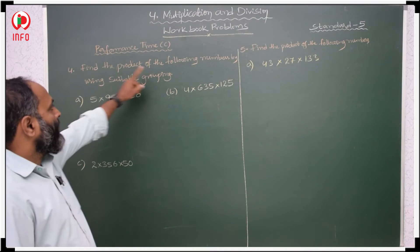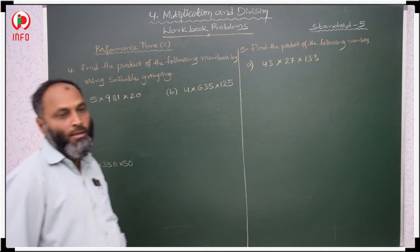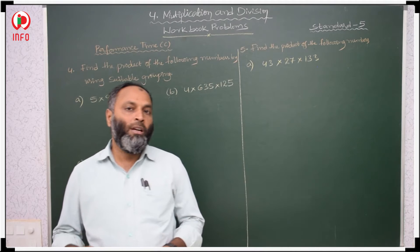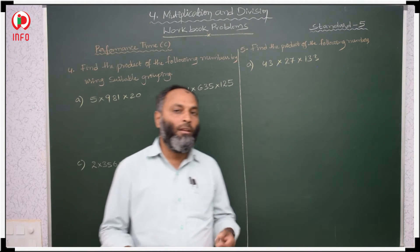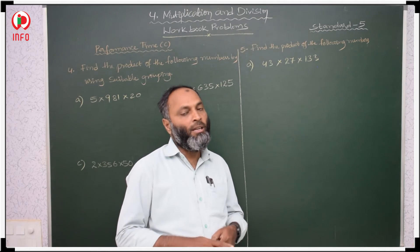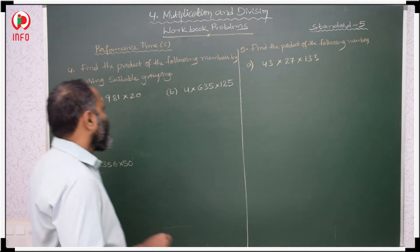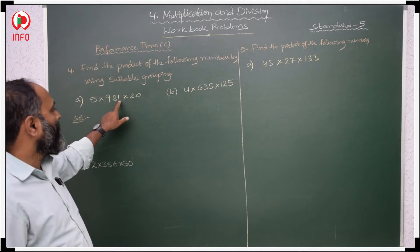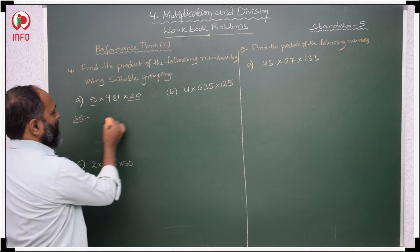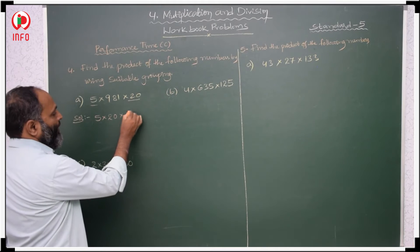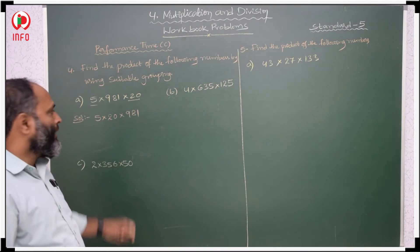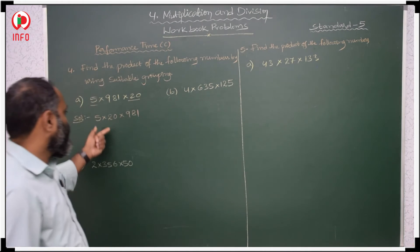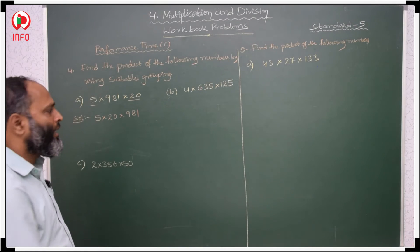Find the product of the following numbers by using suitable grouping. So in the easiest way, we have to first make a group and find the product without making it difficult. We have to make a regrouping first and find the product in the simplest way. Here 5 into 981 into 20 is given. I want to take 5 and 20 first — rearrange to 5 into 20 into 981. If the order of the multiplicands changes, the product never changes. So 5 into 20 is 100.